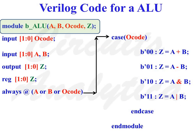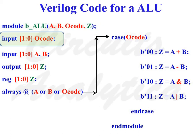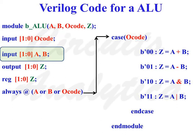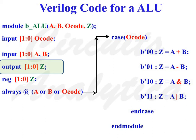Now let us discuss the Verilog code for an arithmetic and logic unit. The first line, module B_ALU (A, B, O-Code, Z); denotes that the module is named B_ALU with ports A, B, O-Code and Z. The next line, input [1:0] O-Code, specifies that O-Code is an input port of 2-bit wide. The following line specifies that A and B are two input ports of 2-bit wide. The line output [1:0] Z; denotes that Z is an output port of 2-bit wide.